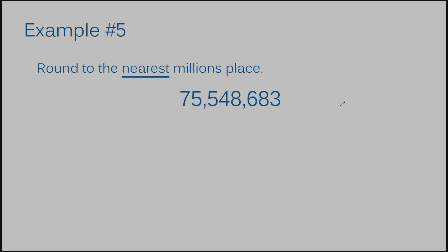Example number 5: round to the nearest millions place. The millions place is always to the left of a comma — it's the seventh number from the ones place. We're rounding to the millions place, so we consider the number directly to the right of it. The rhyme: 5 or more, raise the score; 4 or less, let it rest. The number directly to the right is 5 or more, so we raise the score — we make the number larger. The answer to example number 5 is 76,000,000 — 76 million.